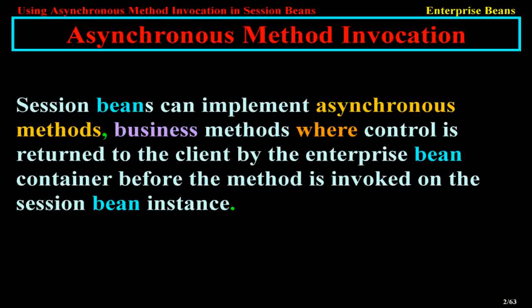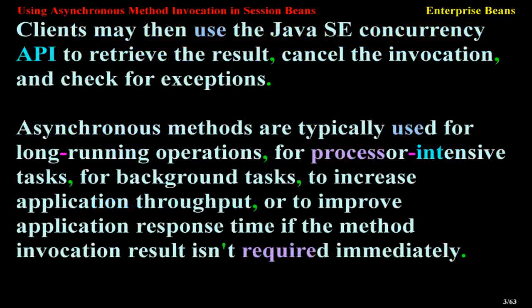Clients may then use the Java SE Concurrency API to retrieve the result, cancel the invocation, and check for exceptions. Asynchronous methods are typically used for long-running operations, processor-intensive tasks, background tasks, to increase application throughput, or to improve application response time if the method invocation result isn't required immediately.